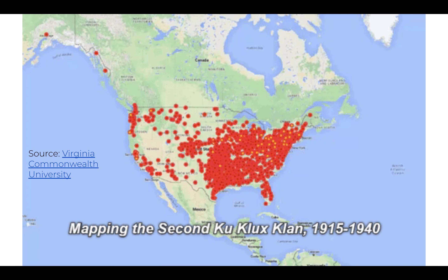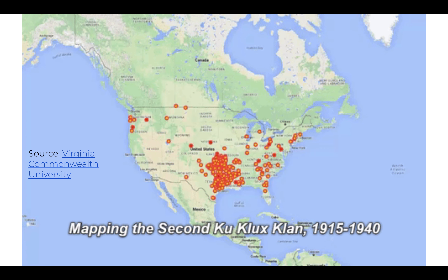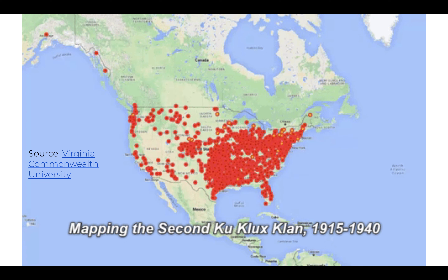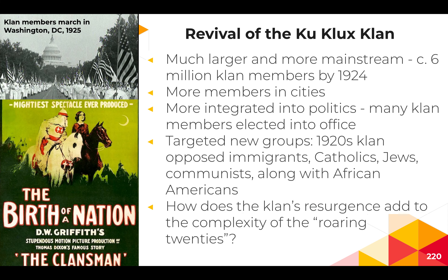The second Klan was not exclusive to the South — chapters popped up all over the country, particularly in the Pacific Northwest. Klan members were a powerful force in the Democratic Party, particularly in the South and in many western and midwestern states. Portland, Oregon was one of the largest Klan hubs on the West Coast in the 1920s. There was also an increasing number of women in the Klan. The Klan began fading in 1925 due to national scandals that discredited major leaders.